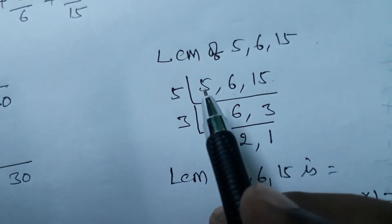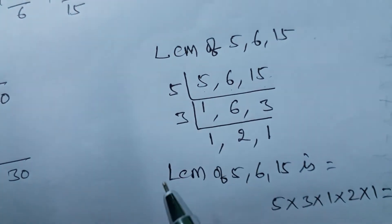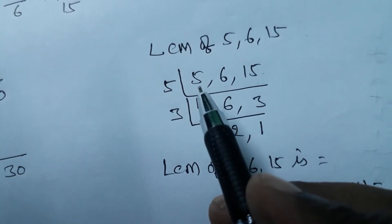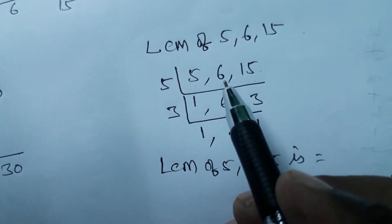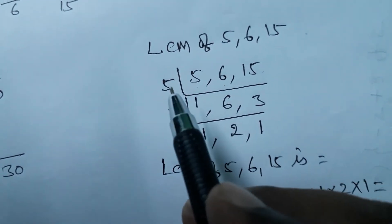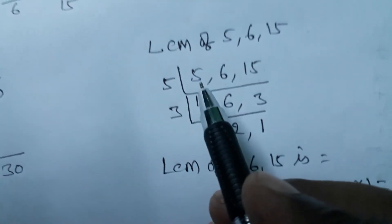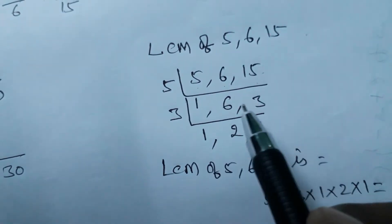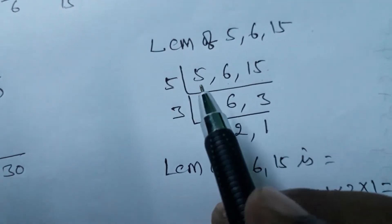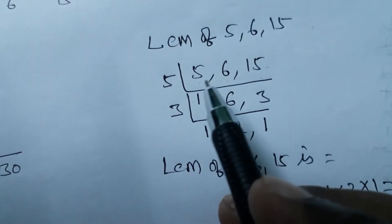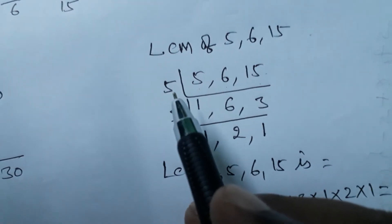If a number is possible for all numbers, take that as the divisor. But if it is not possible for all, then at a minimum, two numbers should be divisible by the chosen divisor. Out of all given numbers, at least two must be divisible — then you can take that divisor. Here, 5 and 15 are divisible by 5, so two numbers are possible.